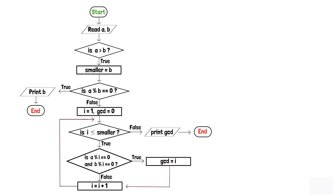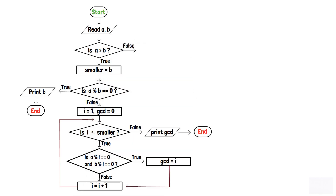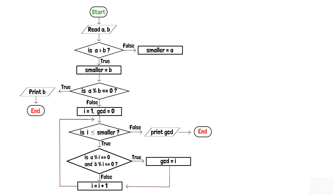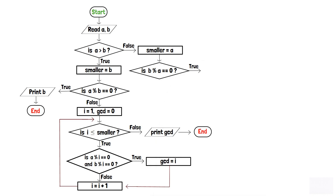Now, if the condition inside the first decision box is false — that is, if a is not greater than b — then the value of a is copied into variable smaller using a process box. A decision box is then applied to check if b modulo a equals 0. If yes, a is printed and the program is terminated. If not, the same process is followed where i is initialized to 1 and gcd is initialized to 0.